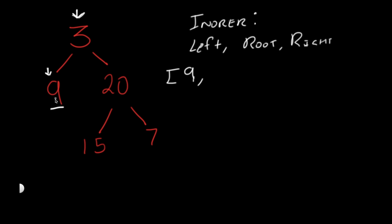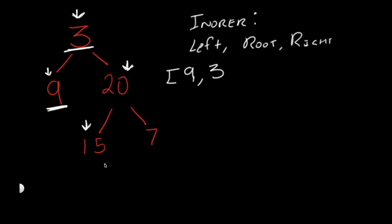After the root we look at the right, so we check if 9 has any right child — it doesn't. Now we go back to 3 and add that to our list. Next we look at 3's right child, which is 20. Now 20 is our root temporarily. We look at 20's left child, which is 15. With 15 as root, we check for its left child — it doesn't have one — so we add 15. Then we check 15's right child, which also doesn't exist.